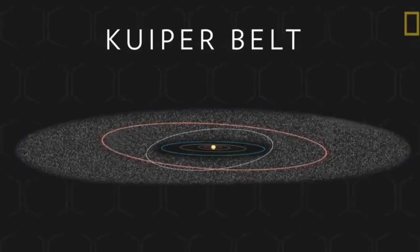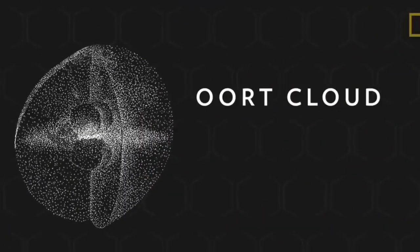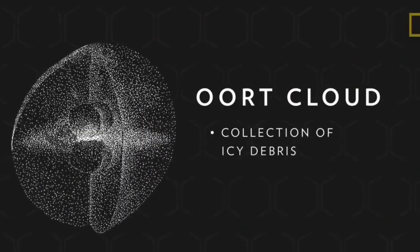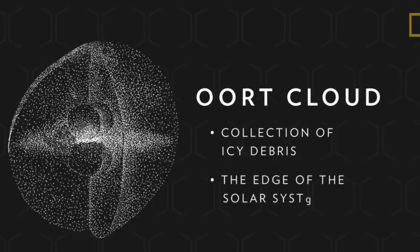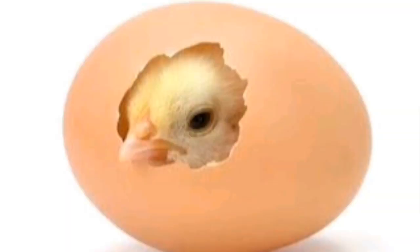Then, when you pass the Kuiper belt, and go very far away, you will meet with the Oort cloud, which is a region that is believed to be around the solar system, like the way an egg is around a baby chick. And it has very many comets.